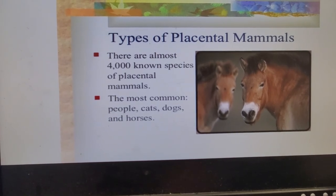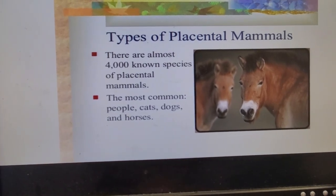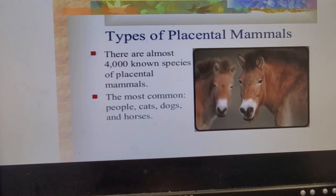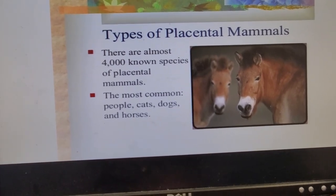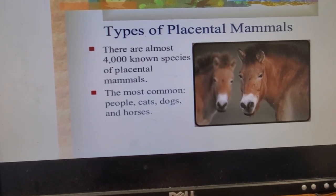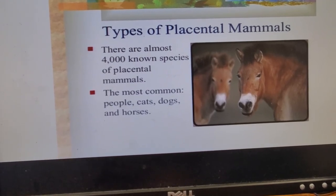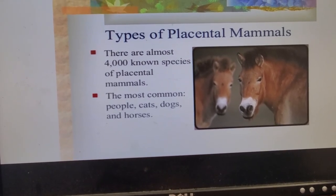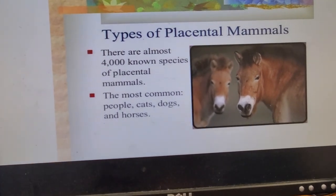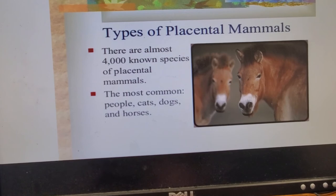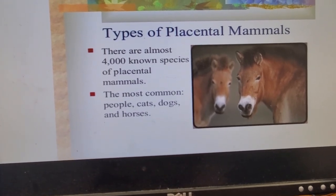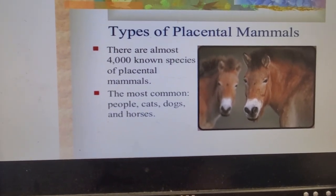The different types of placental mammals: there are almost 4,000 known species. The most common are people, cats, dogs, and horses — many that we've domesticated. This also extends to hoofed mammals like goats and sheep, and things like bears. Basically anything you typically think of when you hear the term mammal would be a placental mammal.